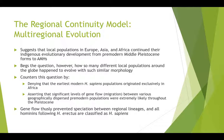Multi-regionalism counters this by denying that the earliest modern Homo sapiens originated exclusively in Africa, and asserting that significant gene flow or migration between geographically dispersed pre-modern populations was likely throughout the Pleistocene. The answer in a nutshell is gene flow: by having high rates of gene flow, populations end up sharing a lot of commonalities. Modern humans, once they emerge, are very quick to disperse and engage in gene flow — including interbreeding with Neanderthals and Denisovans, and even with other regional populations of pre-modern humans.